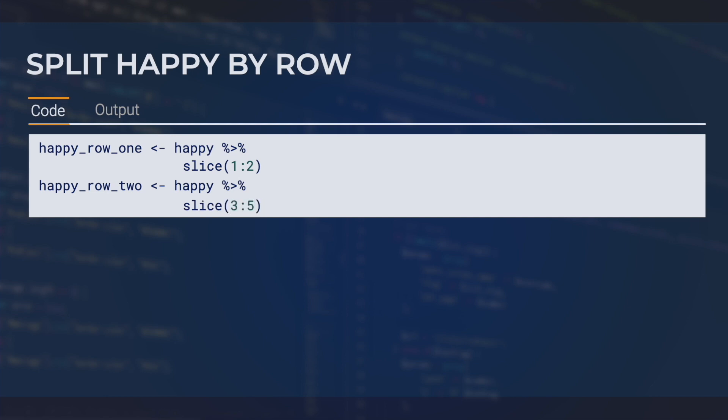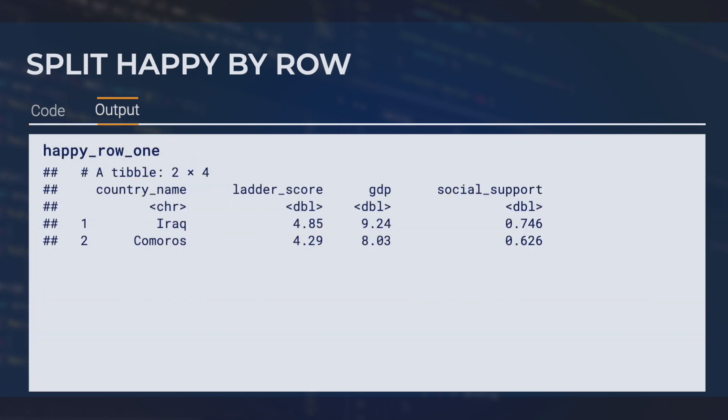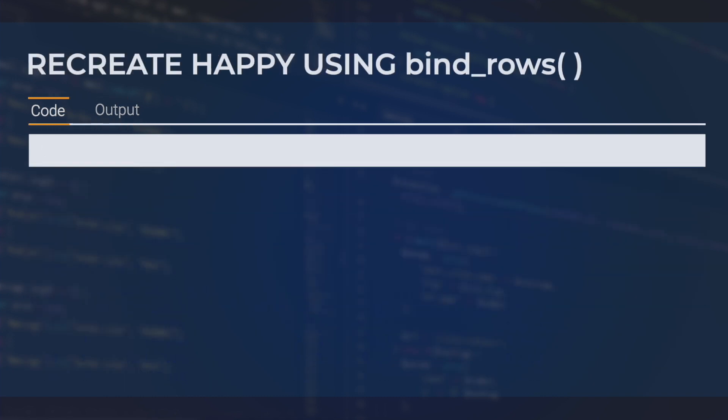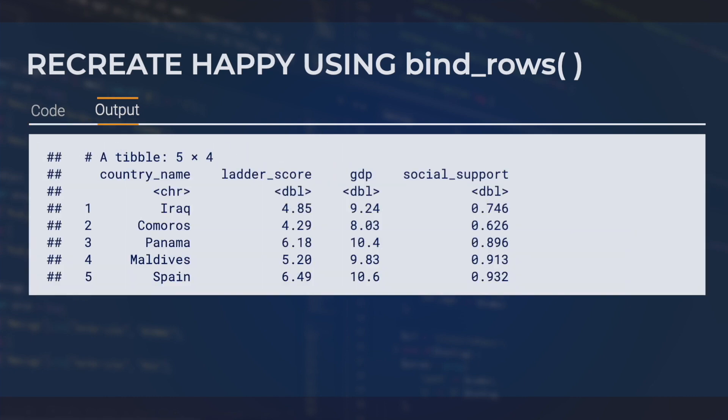The first data frame is called happyRow1, which looks like this. And the second is called happyRow2, which looks like this. We can supply these two data frames to bindRows like this, and we get back our original data frame. So we can see how this function is literally binding the rows of these two data frames.